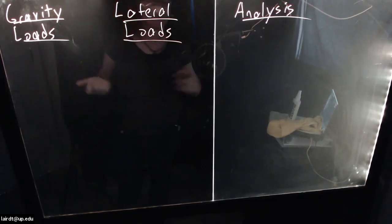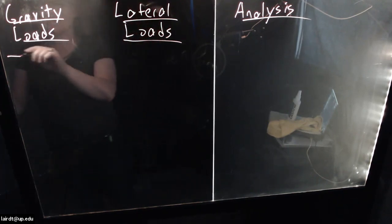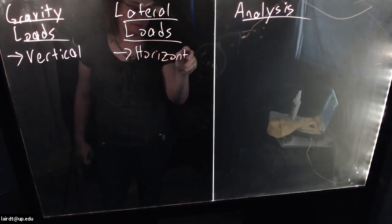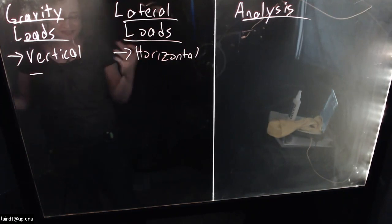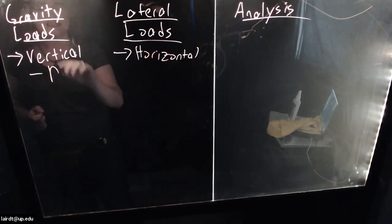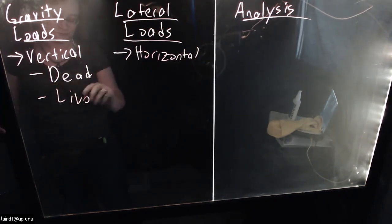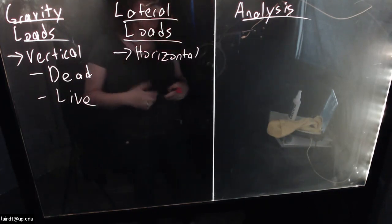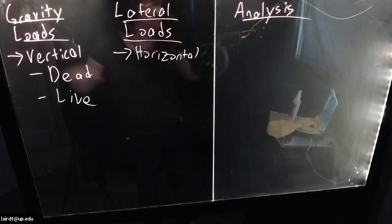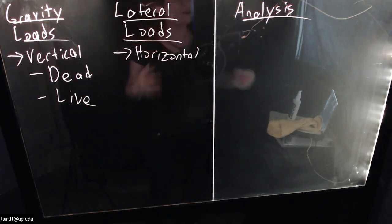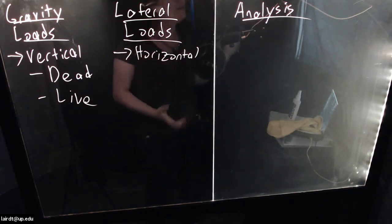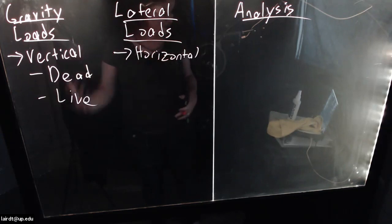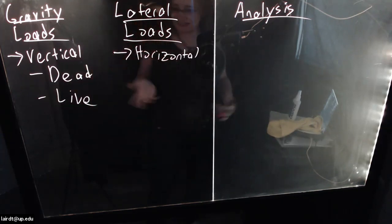You can probably tell the difference just from the names. Gravity loads are going to be vertical, and lateral loads are going to be horizontal. In terms of gravity loads — forces ultimately generated by gravity — what we're typically looking at is dead load and live load. Dead load represents the weight of the structure and anything in the building considered permanent, like drywall. Live load is anything that's going to move around: people, furniture, anything that isn't bolted down.